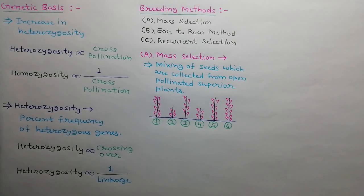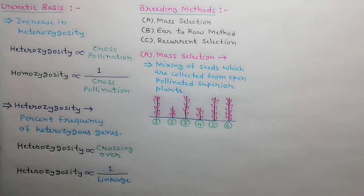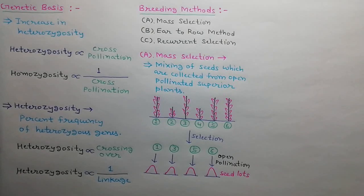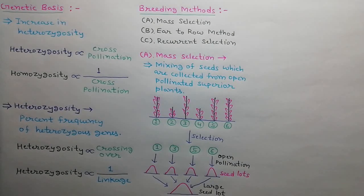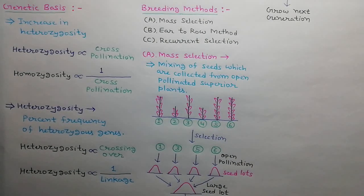Suppose there are six plants in a field. Plant number one, three, five, and six are superior. So plant number one, three, five, and six are selected and their seeds are collected. These seeds are mixed up as a mass to make a large seed lot. This mass of seeds is then used to grow the next generation.